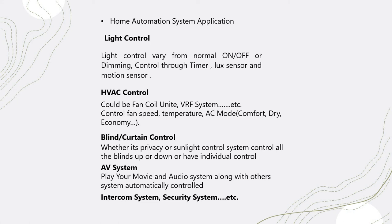For HVAC control, you can control your HVAC systems — in the Gulf region people commonly use VRV, but most commonly they use FCU-type systems. You can control the AC mode, temperature, and fan speed, and create scenarios linking with other applications. For blind and curtain control, you can control curtains whether using a 230-volt direct drive motor or dry contacts, sending commands to operate curtains fully open, fully closed, or at a set percentage such as 50% open.